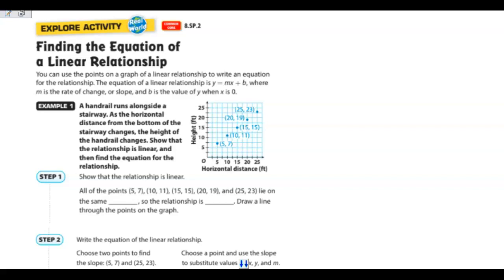Example 1. A handrail runs alongside a stairway. As the horizontal distance from the bottom of the stairway changes, the height of the handrail changes. Show that the relationship is linear, and then find the equation for the relationship. And it looks like they've already plotted the points for us in this graph.